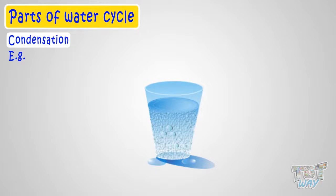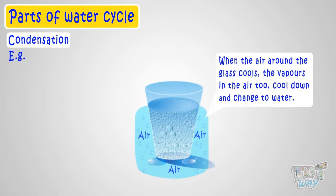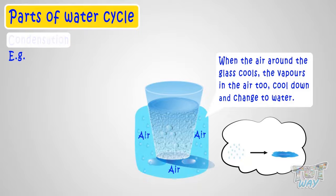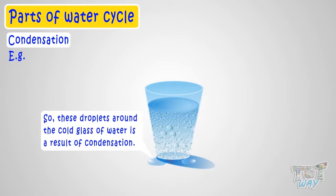The cold water inside the glass cools down the air around the glass too. So the water vapors in that air too, cools down. And when water vapors are cooled down, they again form water. And it's called condensation. So these droplets around the cold glass of water is a result of condensation.